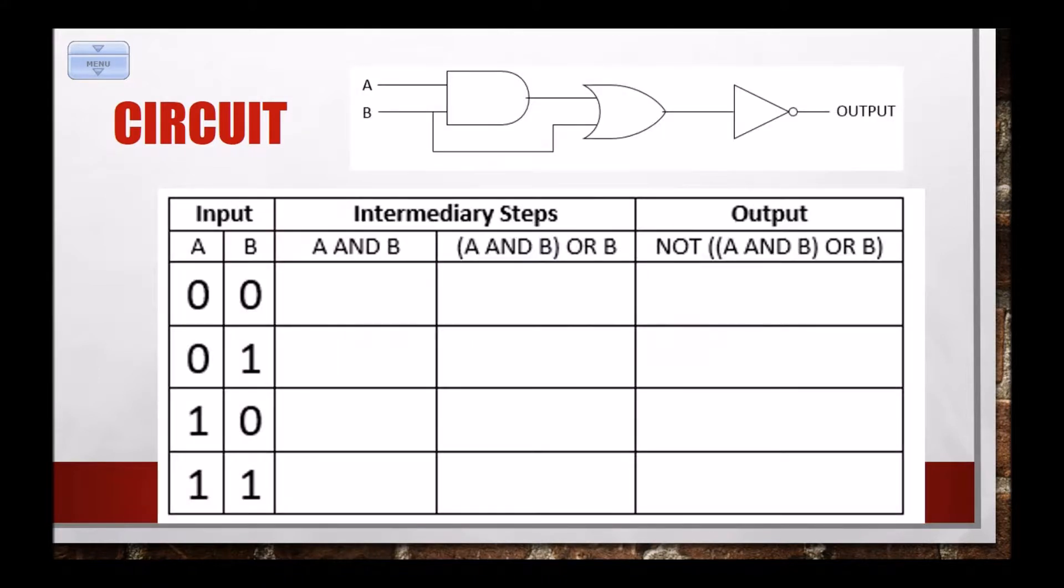So we can fill out the truth table for this, and it works the same way that our truth tables did before. So to figure this out, notice here under my output I have my entire statement. So under A and B is where I'm going to start, because it's the first thing I do. Well zero and zero is zero, zero and one is zero, one and zero is zero, and one and one is one. Okay, referencing my basic logic gate truth tables, or remembering that AND is only true when both are true. So true and true, one and one is one, everything else is zero.